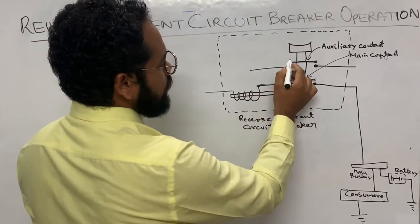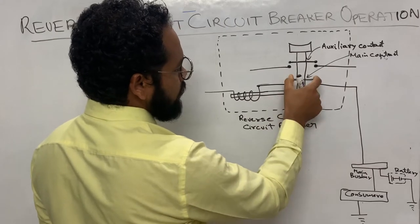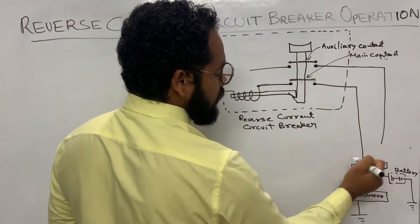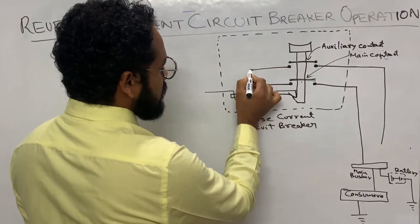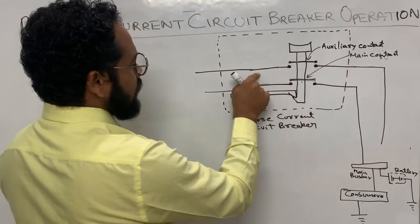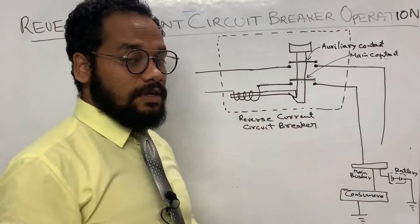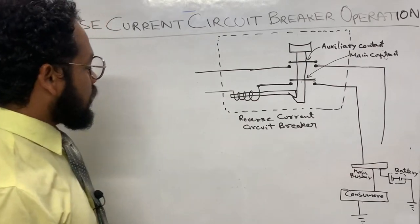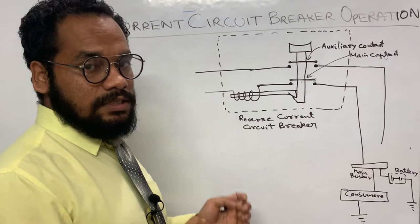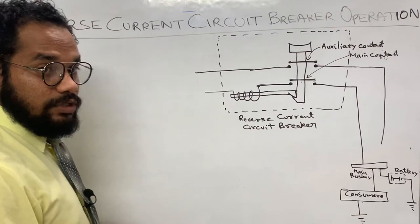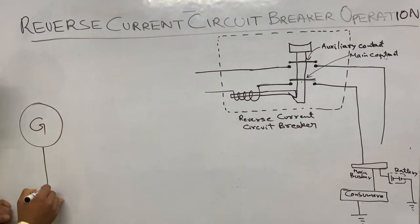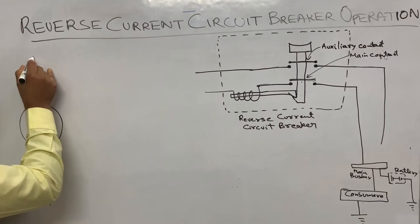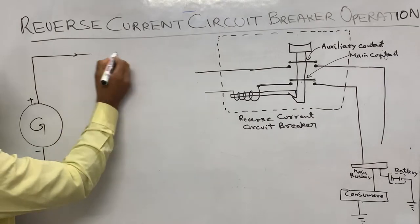In the circuit breaker we have a main contact and an auxiliary contact. The main contact, when closed, will allow the current to flow into the bus bar and the batteries. The auxiliary contact connects to the generator shunt field winding. The generator's output is taken from its positive terminal and goes along the output carrying line of the generator.